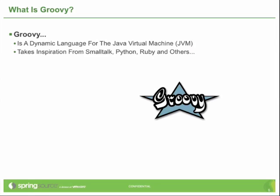Groovy takes inspiration from a lot of programming languages, including Python, Ruby, Smalltalk, JavaScript, Perl, and the list goes on. Those are all examples of dynamic languages, and Groovy has taken inspiration from a lot of those languages. So if you already know Python, when you're learning Groovy you'll see some things that look familiar. If you're already a Groovy developer and then go take your first look at Smalltalk, you may find some things that look familiar from your Groovy experience.